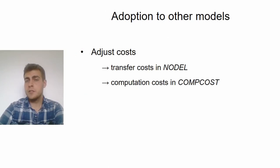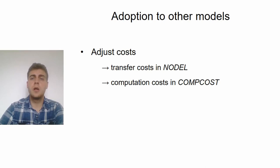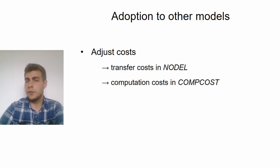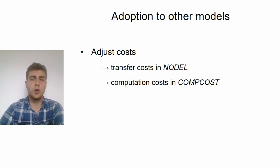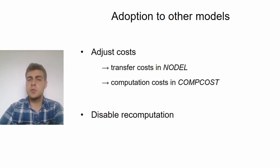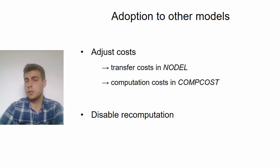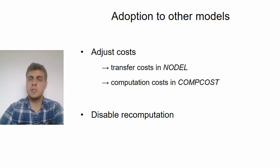So this summarizes the base ideas of our constructions in the one-shot model, and most of these techniques can be carried over to the remaining models with minor modifications. For example, we have to account for the fact that there are some extra costs in other models — in nodal, you cannot delete a value after its last use, so you have to transfer it to slow memory, and in comCost, computations have an explicit extra cost. Besides this, we also have to disable recomputations in the models that allow recomputations, because this could lead to a different behavior, and we can design a specific gadget explicitly to achieve this task.